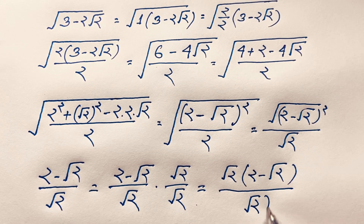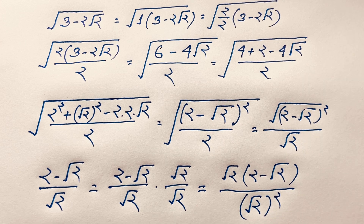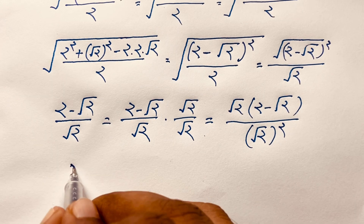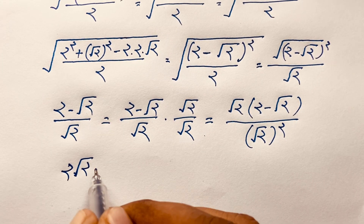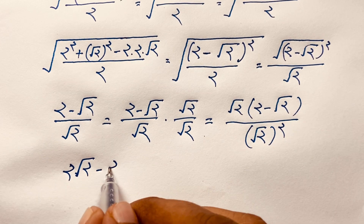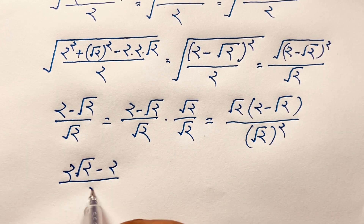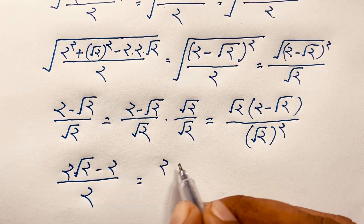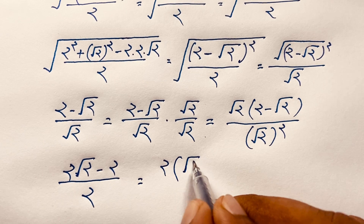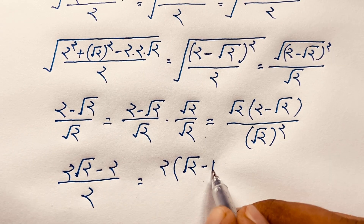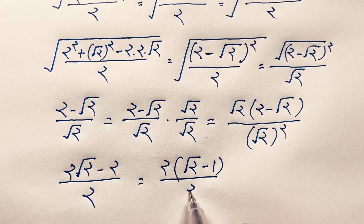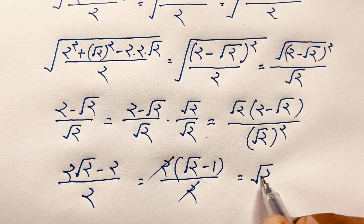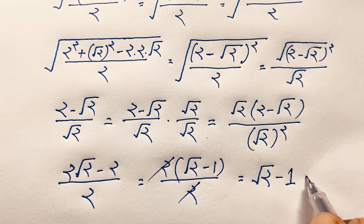So we get 2 square root of 2 minus (square root of 2 squared), over 2. That gives 2 square root of 2 minus 2 over 2. Now 2 is common, so taking 2 as common and dividing, we get square root of 2 minus 1 over 1. The 2s cancel out and our final answer is square root of 2 minus 1.